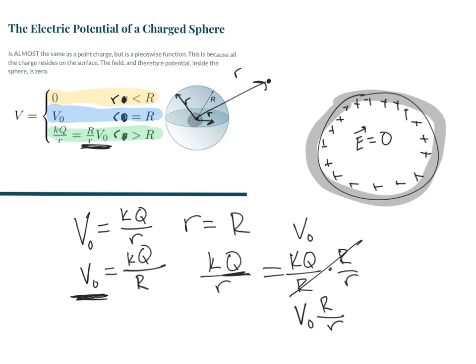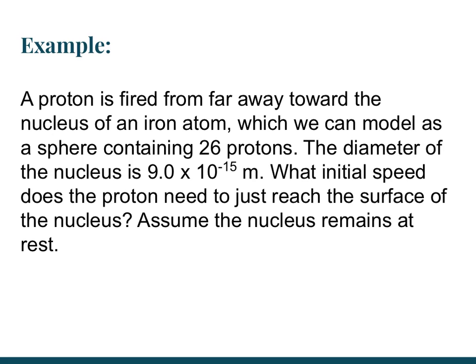We've assumed here that this is a conducting sphere, like something made of metal, where all the charge resides along the outside. If it is an insulating sphere where the charge lies throughout the sphere, that's a different thing — we're not going to worry about the inside of the sphere if it is not conducting. So let's look at this example.